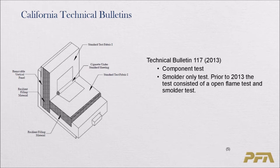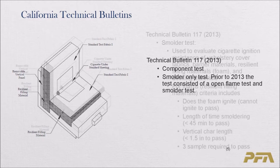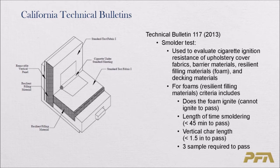California Technical Bulletin 117 applies to residential furniture. A mini couch is constructed and a lit cigarette is placed into the seam. If the foam ignites, it is an automatic failure. Once the cigarette completely burns out, the time that the foam still smolders is measured — it must be less than 45 minutes. The vertical char length from either side of the cigarette, top and bottom, must be less than one and a half inches to pass. This is performed three times.